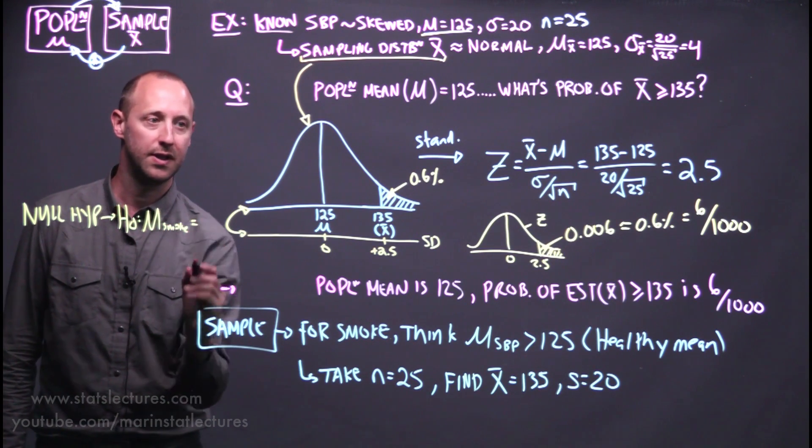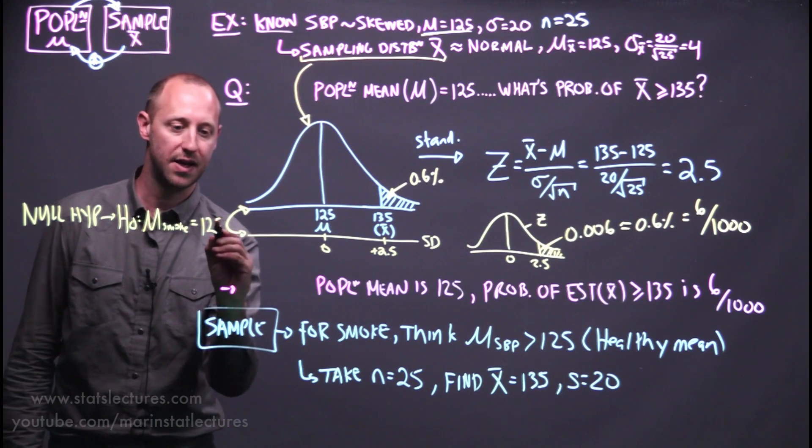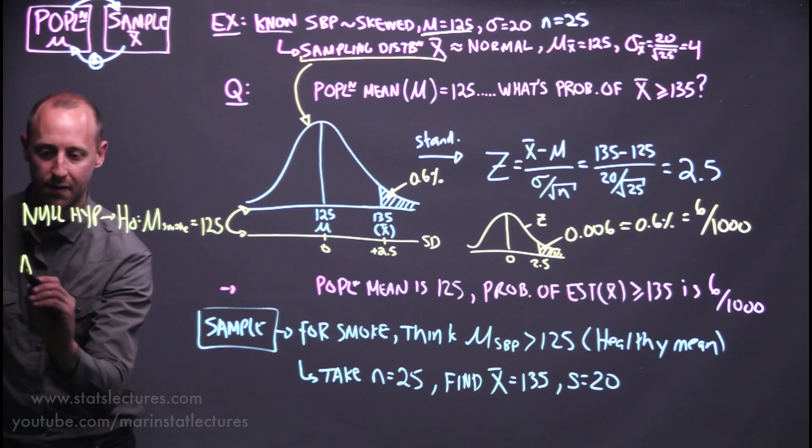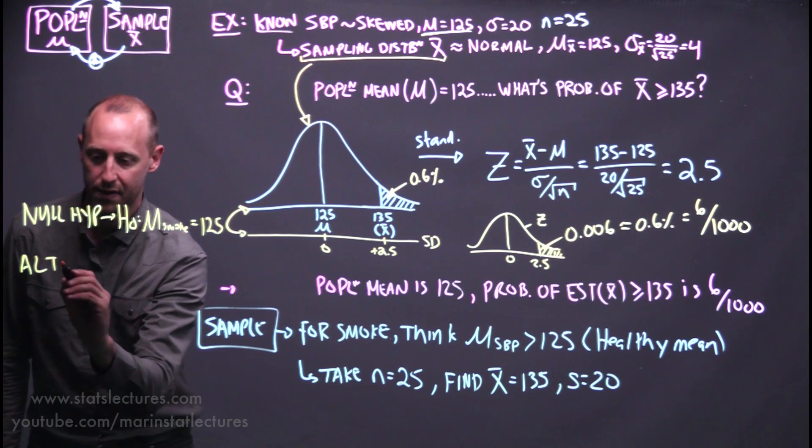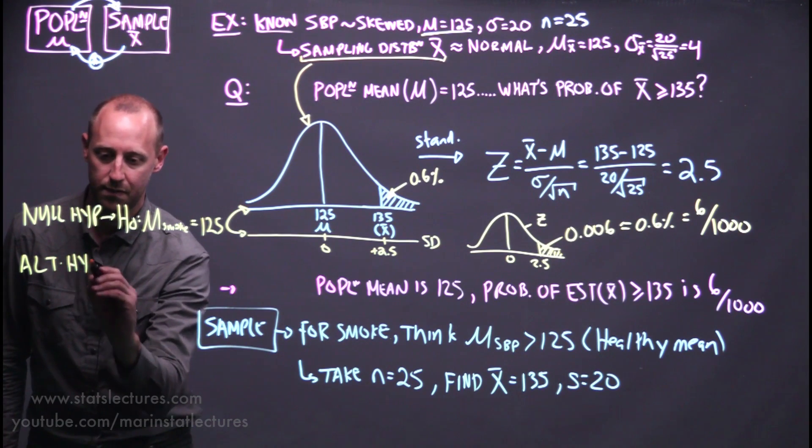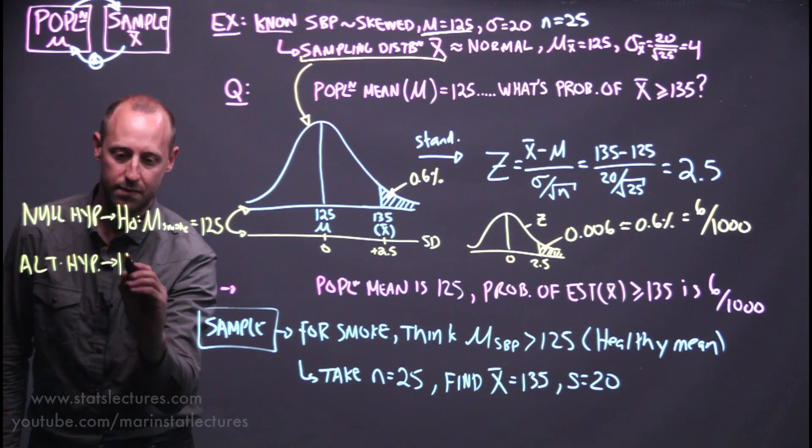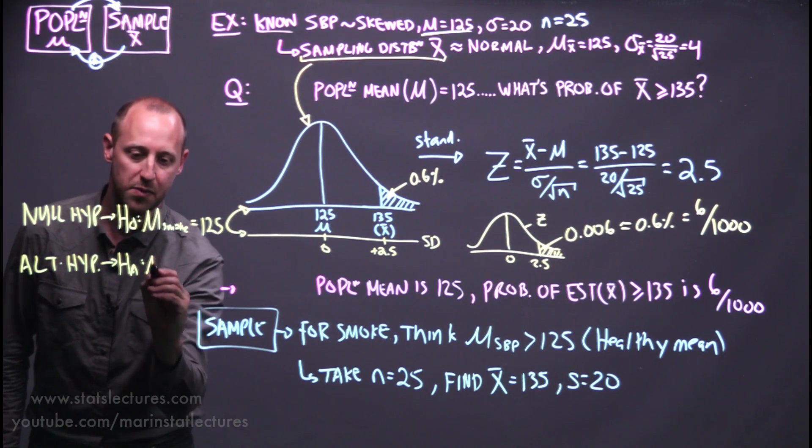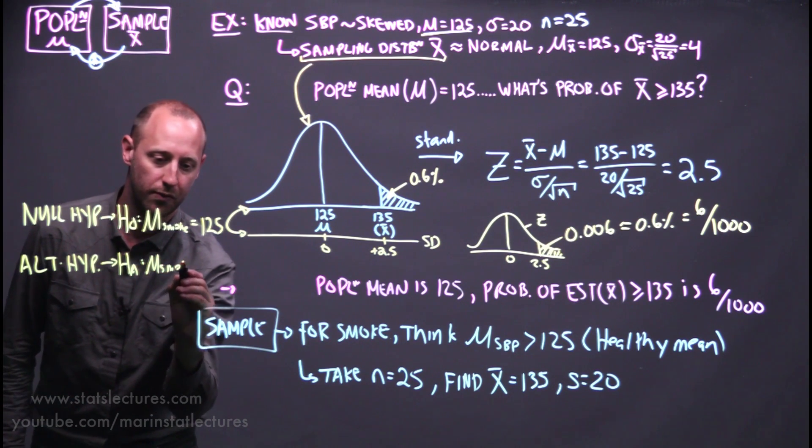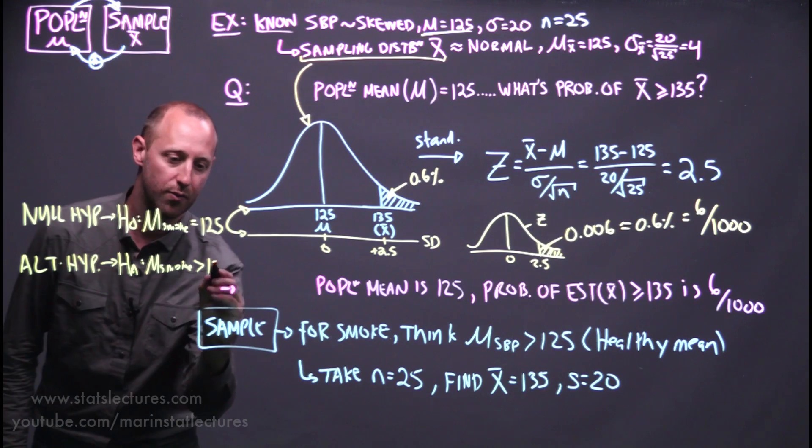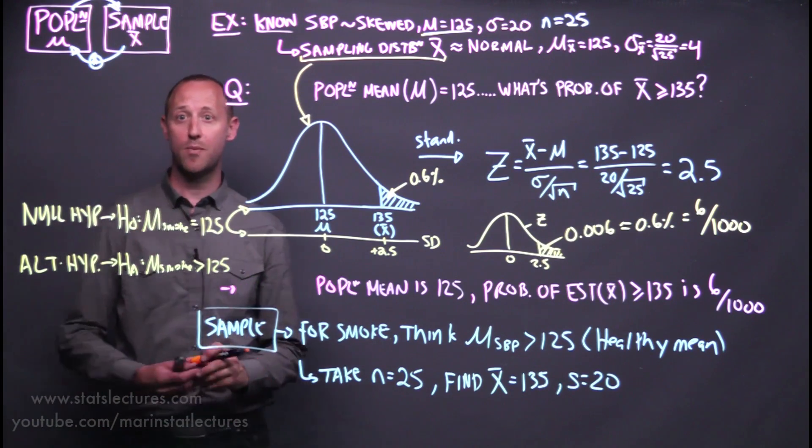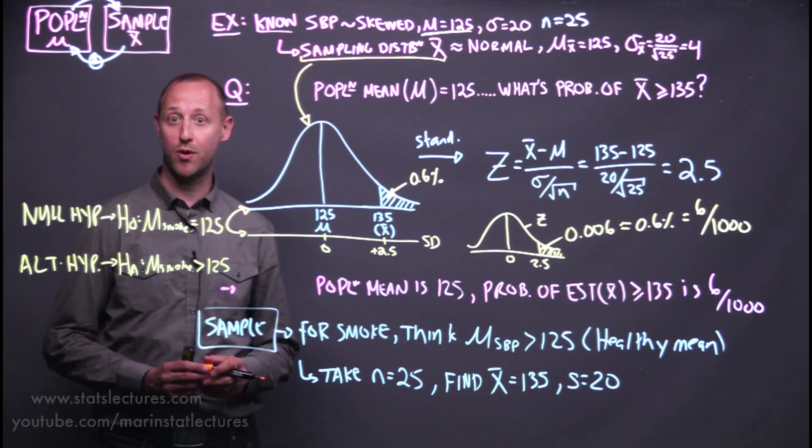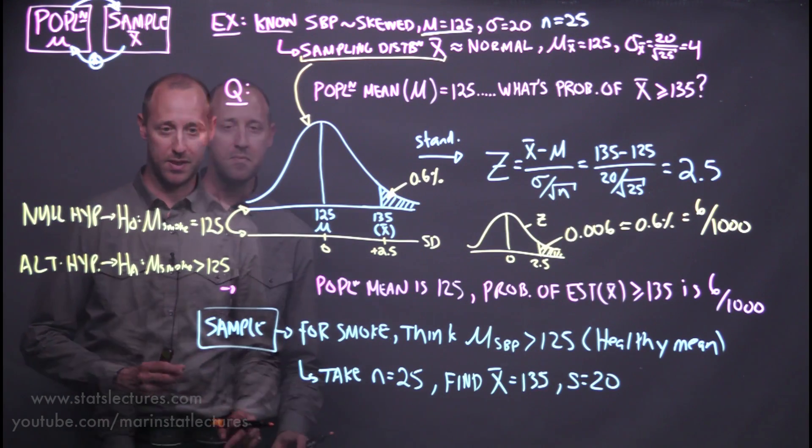Versus an alternative that the mean for smokers is greater than 125. So we start by assuming that this population of smokers is no different than the healthy population.